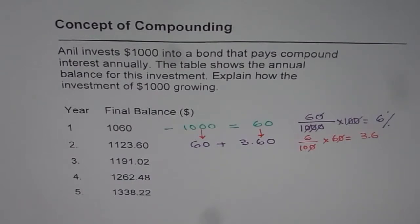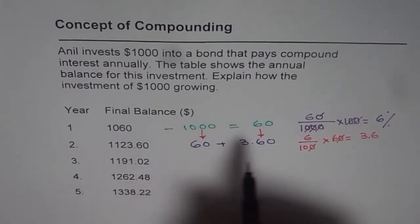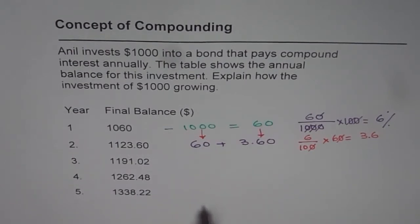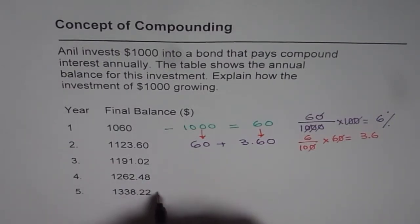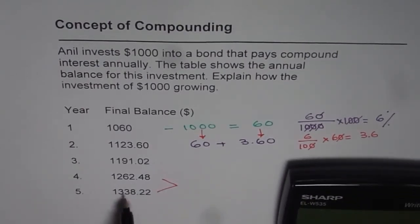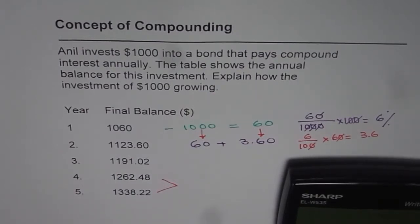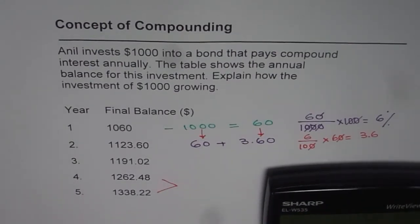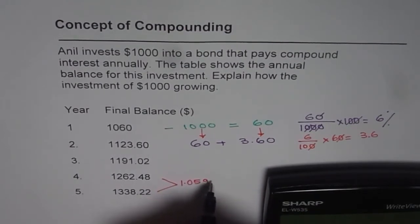There is another way to look at this. We have seen that this growth is not linear — it is not increasing by $60 all the time. Let's divide consecutive terms to see if we can find a common factor by which it is growing. Using a calculator, we divide 1338.22 by 1262.48, and it gives us 1.0599.